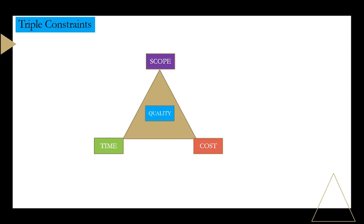So I hope that in your mind this is clear. The three most common constraints are scope, time, and cost. You need to manage all of them together, and also manage quality. That is the triple constraint. Now, how do you use this?